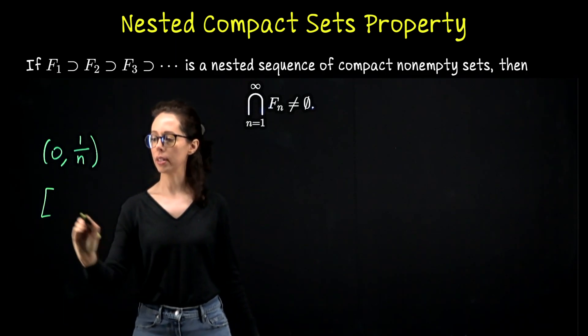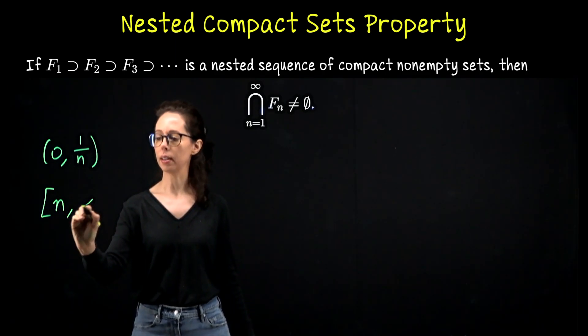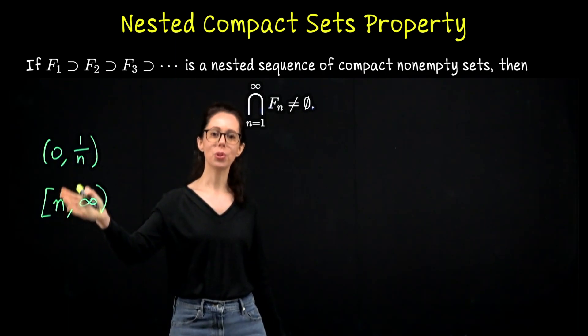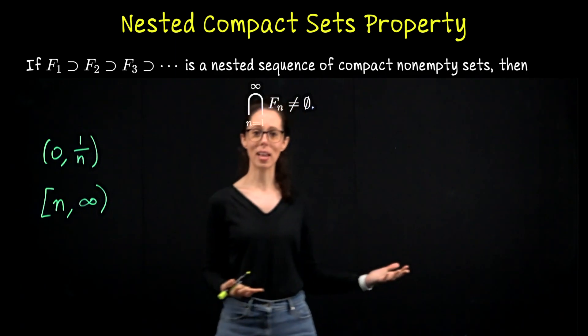Similarly, consider closed intervals of the form [n, ∞). So [1, ∞), [2, ∞), [3, ∞), [4, ∞). These are also nested, and then consider [0, 1/n] where the difference is that I'm looking at closed intervals instead of open intervals.